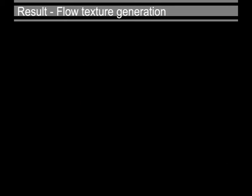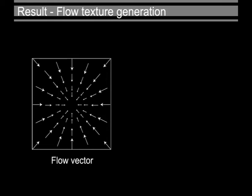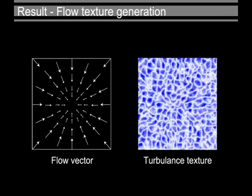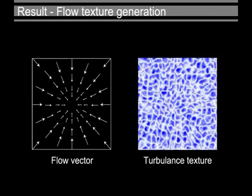Using the predefined flow field, we will demonstrate the generation of the flowed procedural texture. We use flow vectors to represent the directions from the outside to the center of the image in a concentric circle shape.